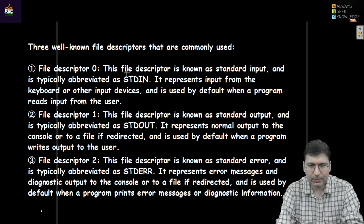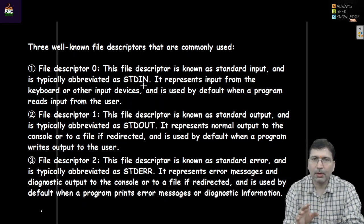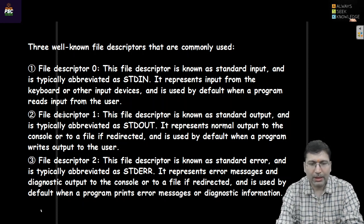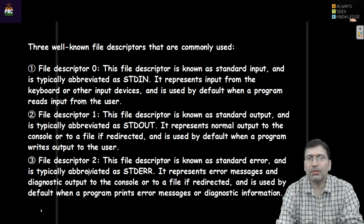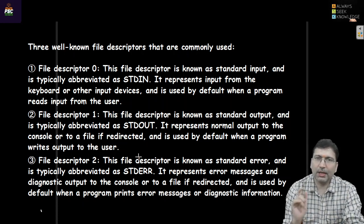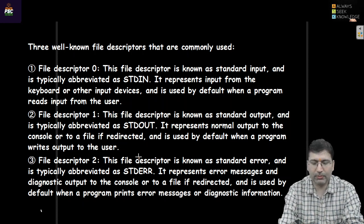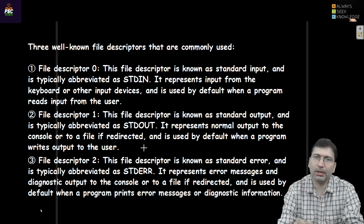File descriptor 0 is used for standard input, which represents the keyboard. So when a process wants to take any data from the keyboard, it reads file descriptor 0. When any process wants to print something on the screen, it prints on file descriptor 1. There is another well-known file descriptor, which is number 2. A file descriptor is a kind of integer which establishes a link to the actual file. When we write data onto that descriptor, that data will be intended to write or read from that particular file.